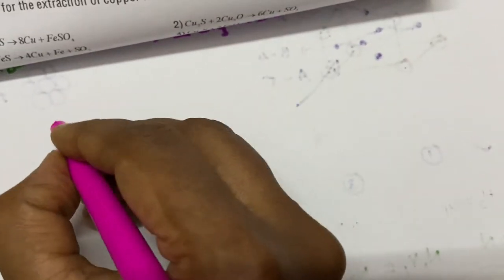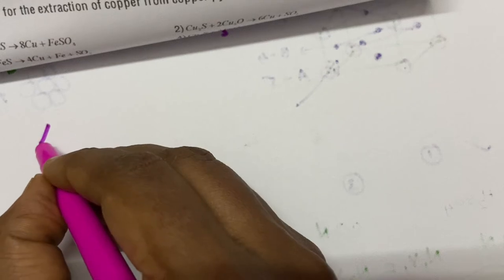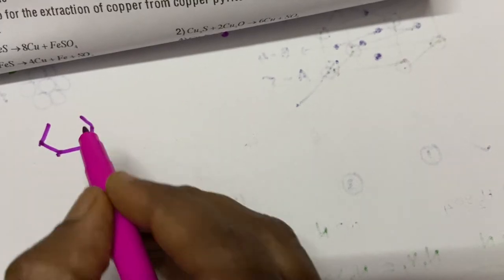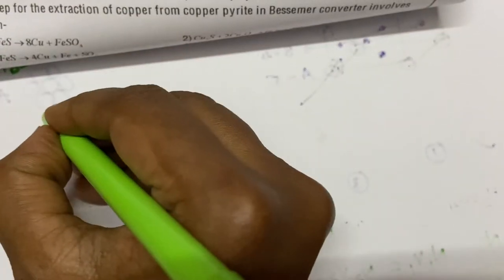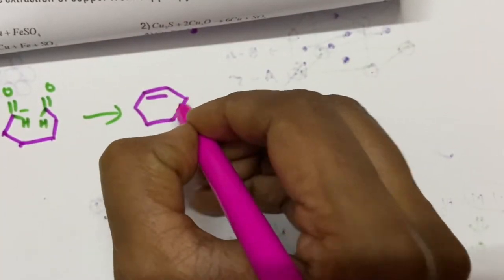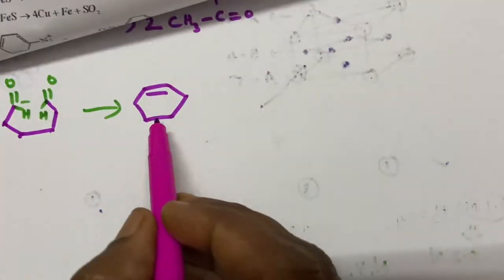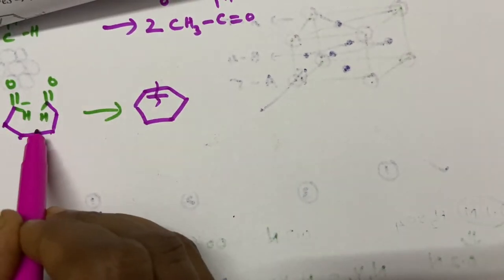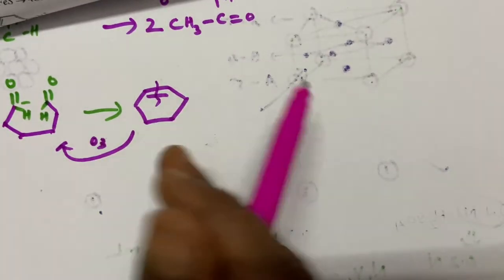From where would this dialdehyde have been formed? If there was a double bond in the ring, breaking it would give this open-chain dialdehyde. So the starting compound is cyclohexene. When you do ozonolysis on cyclohexene, the ring double bond breaks and gives this dialdehyde molecule. You have to think in reverse — the answer is cyclohexene.